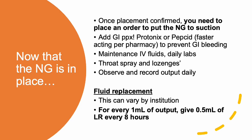Once the NG is in place, look at your orders. At some institutions you will need to place an order to put the NG to suction. You don't want the NG just sitting there not on suction. You'll also want to add GI prophylaxis with protonics or Pepcid to prevent GI bleeding, maintenance fluids, daily labs, and for comfort you can add a throat spray or throat lozenges. Observe and record outputs daily.